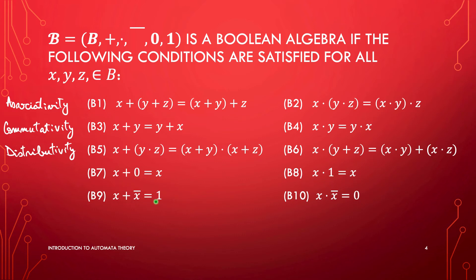Properties B9 and B10 define the behavior of the complement. B9 says x plus x-bar equals 1, and B10 says x multiplied by x-bar always equals 0.